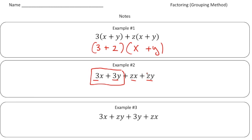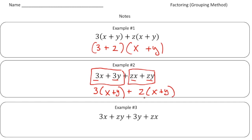We're going to look at this group here and then this group here. For the first two terms, I can factor out a common factor of three, so that's going to be three times x plus y. Now over here I can factor out a common factor of z, so that's going to be z times x plus y. Now if you notice, this is the exact same as the problem up here, where we have three times x plus y plus z times x plus y. So I can now put them together and it's going to be three plus z times x plus y.